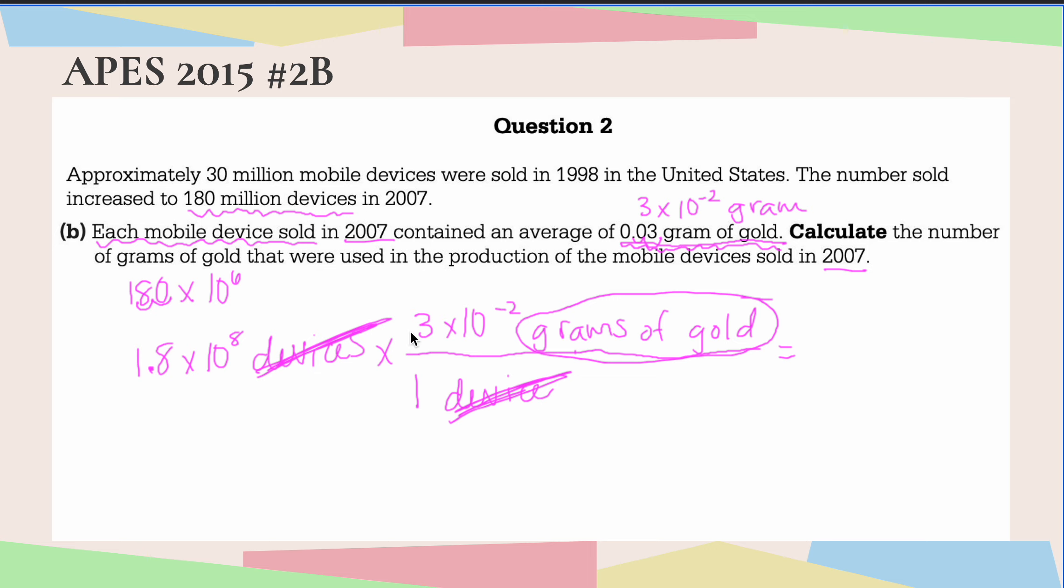So now I'm going to multiply these numbers. Since these numbers are both in scientific notation, I'm going to start by multiplying 1.8 times 3. That would give me 5.4. And now I'm going to do my 10 to the 8th times 10 to the negative 2nd. As a reminder, when we're multiplying numbers with the same base that have exponents, we add those exponents.